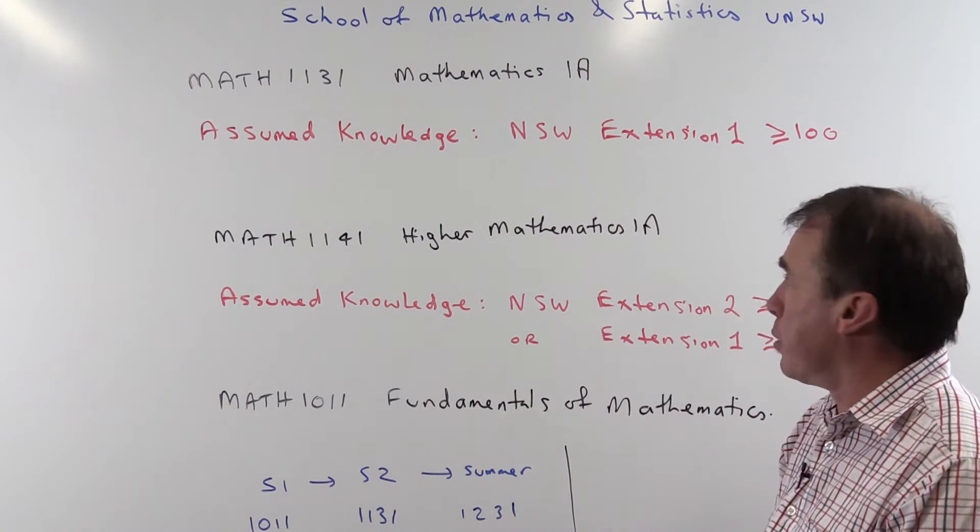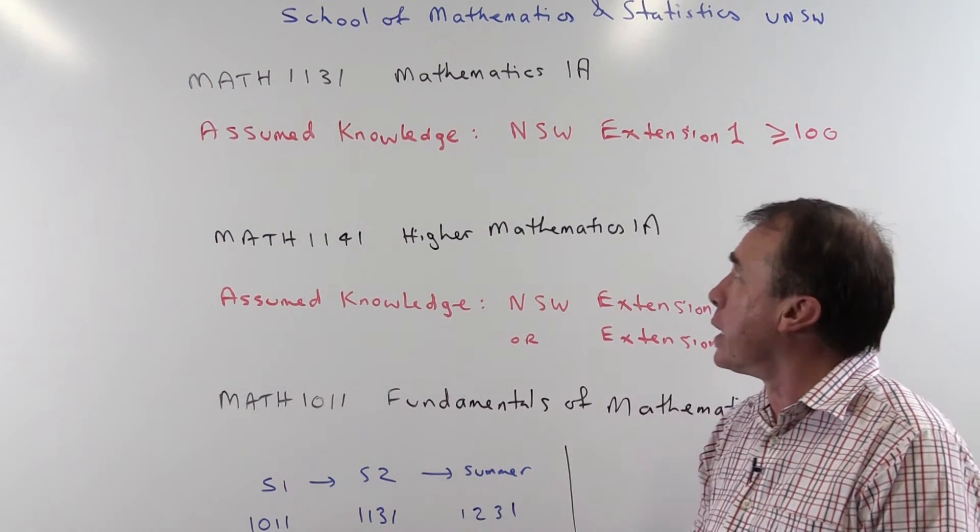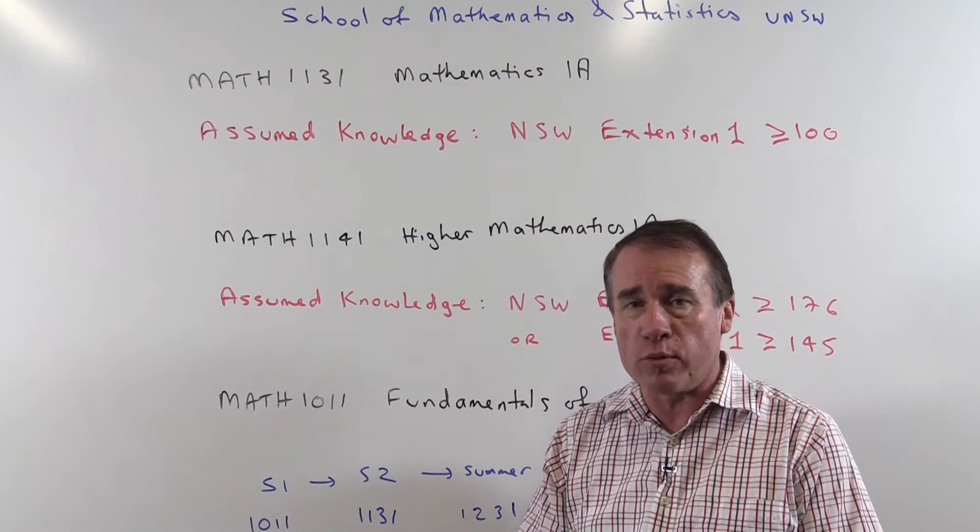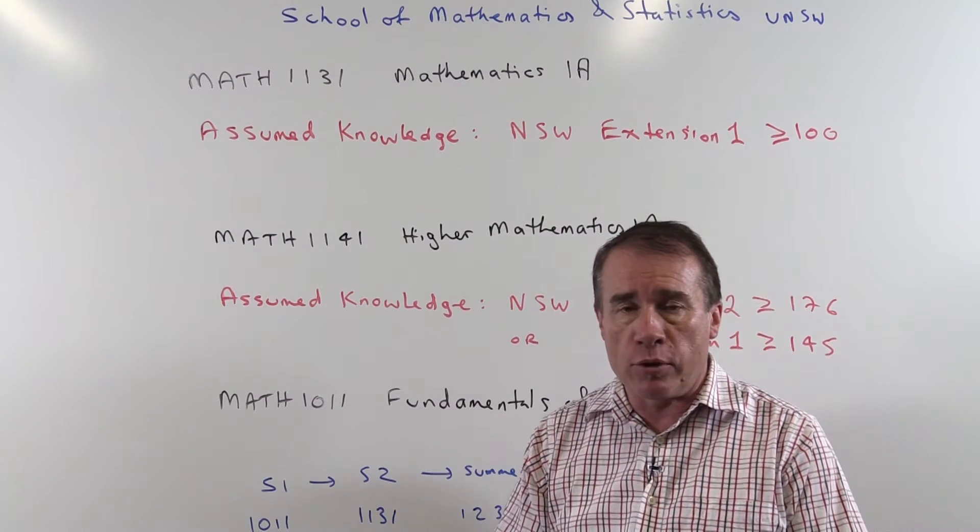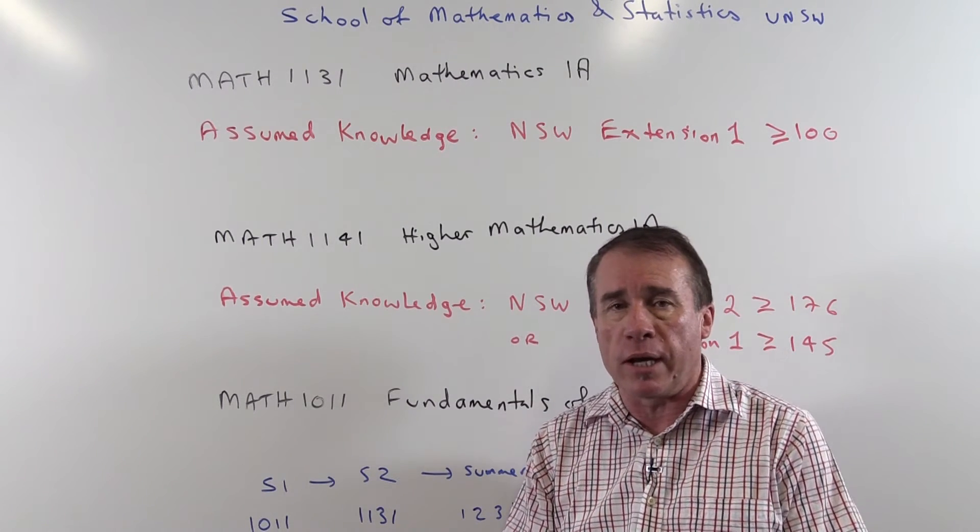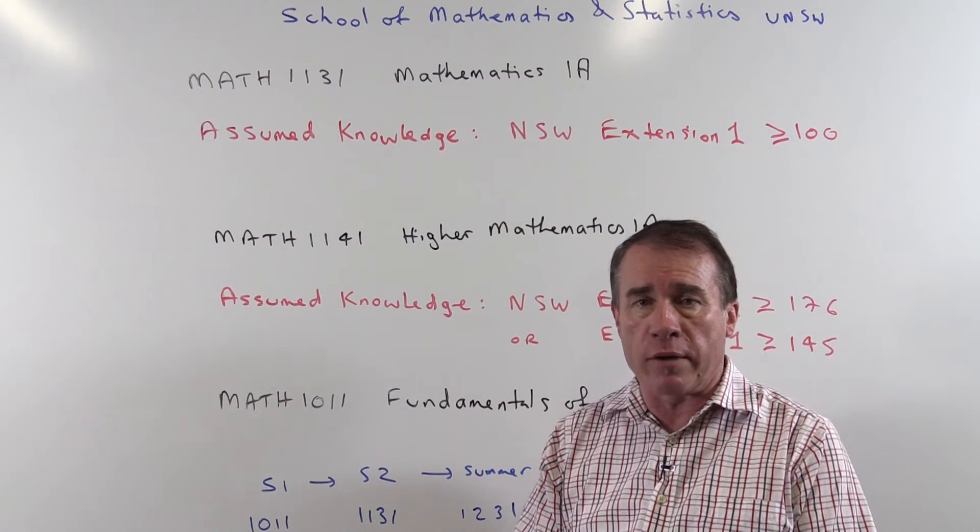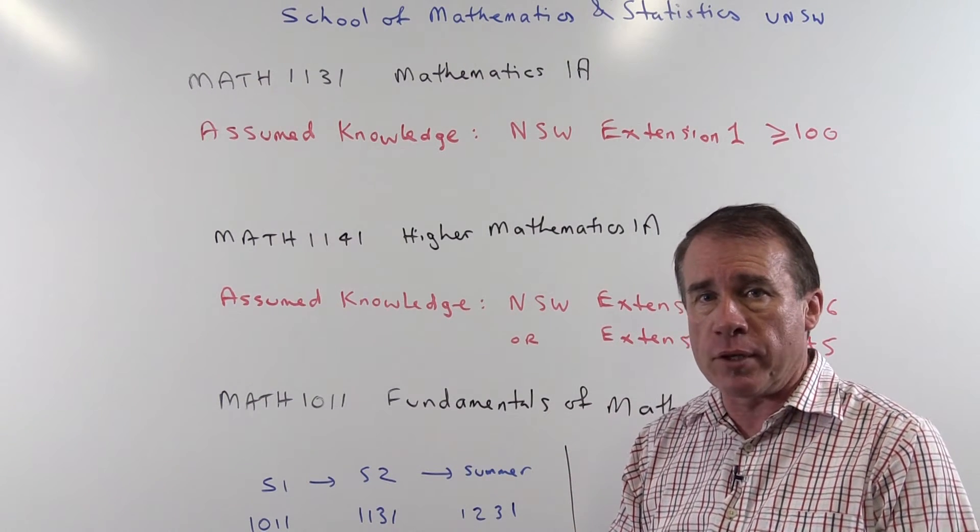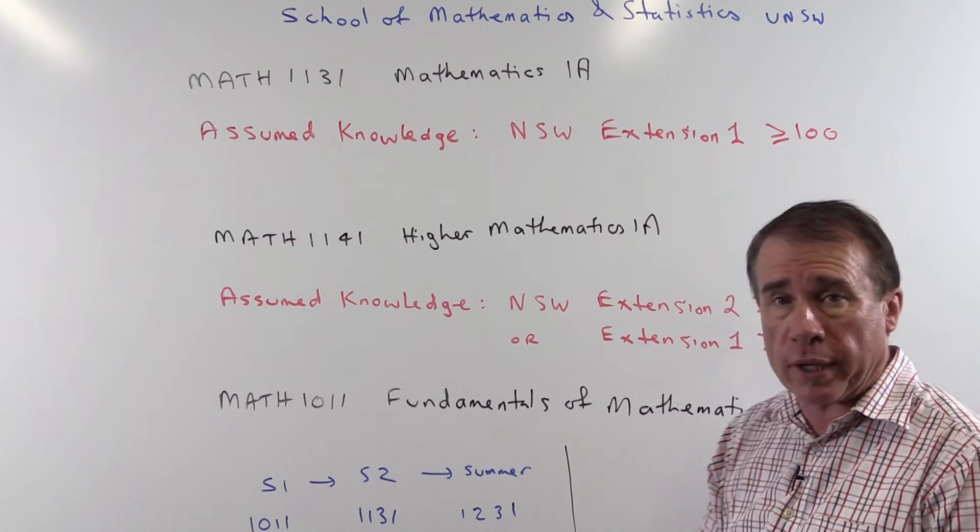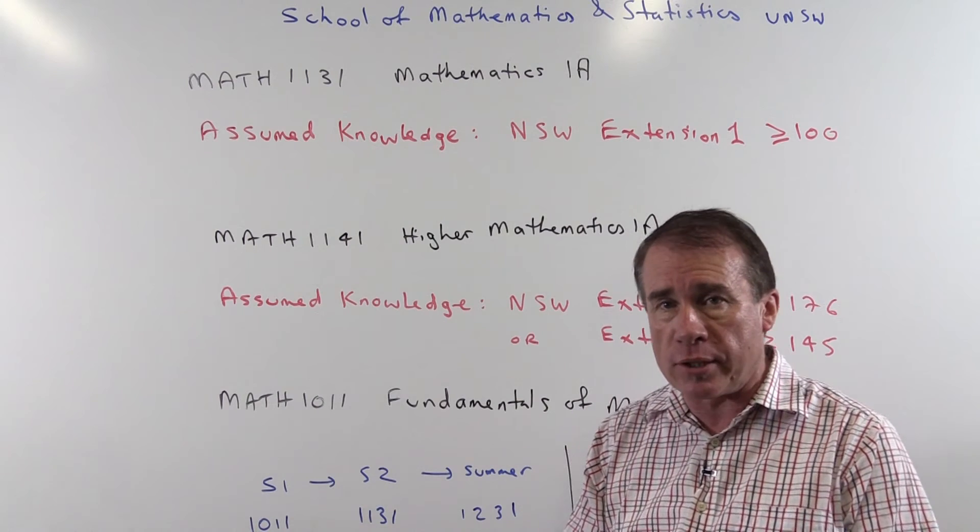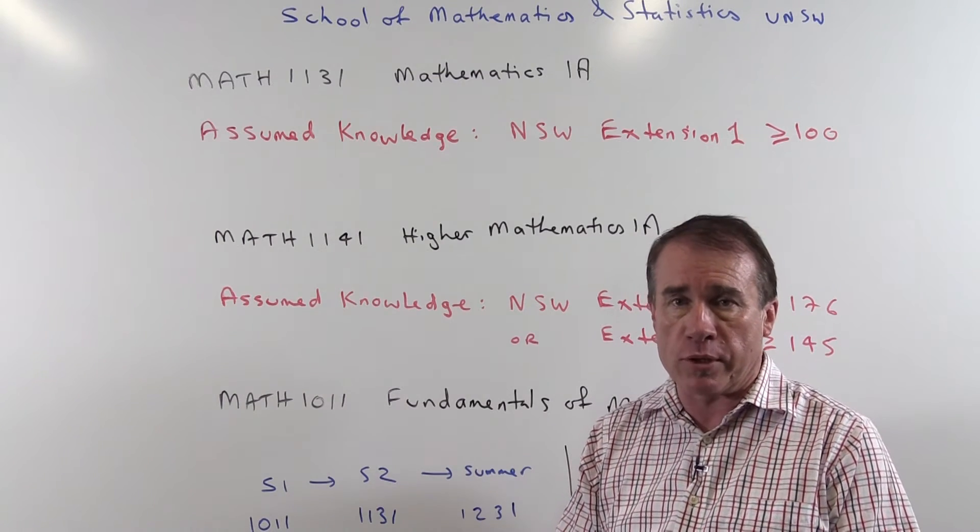If you've done two unit mathematics you can still take Maths 1131. Hopefully some of you will have taken our bridging course which will help you greatly in doing this course. But if you've done two unit mathematics and scored a mark roughly say 90 or better out of 100 then you can still manage 1131 but you will have to work very hard at that course. In fact you'll have to teach yourself in the first couple of weeks a number of the Extension 1 topics. We'll provide notes and information and exercises about that online and you'll need to sit for an assumed knowledge quiz in the first couple of weeks.